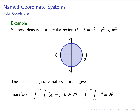In polar coordinates x² + y² = r², so we are simply integrating r³ with r ranging from 0 to 2 and θ from 0 to 2π. The calculus is much simpler and we get 8π kilograms. Polar change of variables made the problem much easier. To apply it, we described the region in polar coordinates, converted all x's and y's into r's and θ's, and did not forget to multiply by the Jacobian determinant, which equals r.